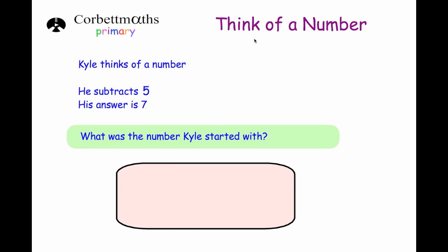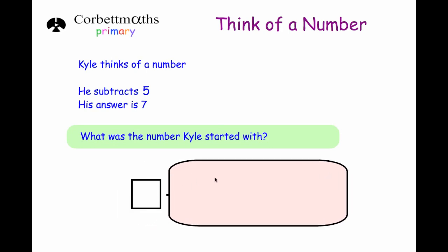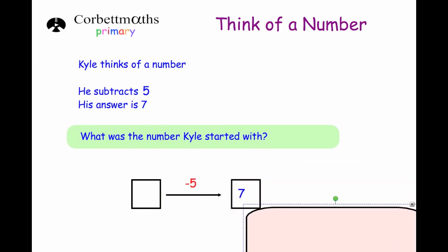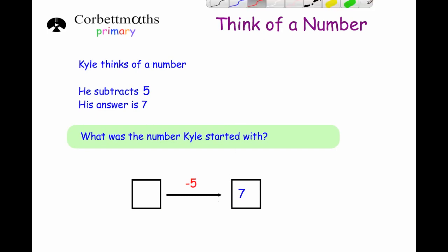The next question: Kyle thinks of a number, he subtracts five and his answer is seven — what was the number Kyle started with? We know he subtracted five and got seven, so we work backwards using the inverse operation. The opposite of subtracting five is adding five. Seven add five is twelve. Let's test it: twelve take away five is seven. So our answer is twelve.